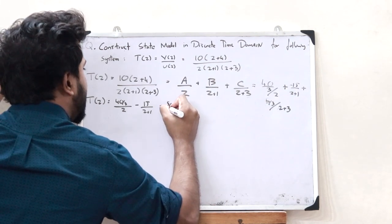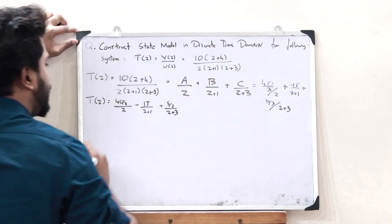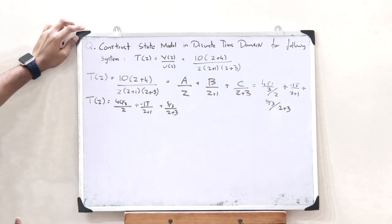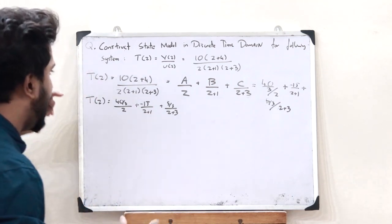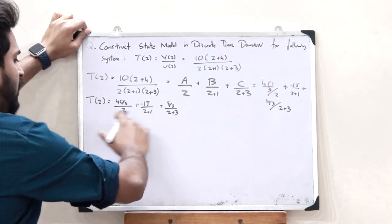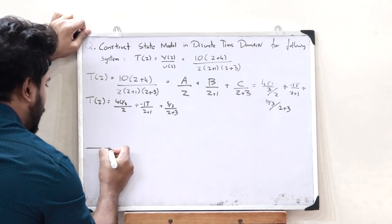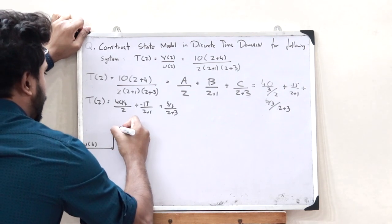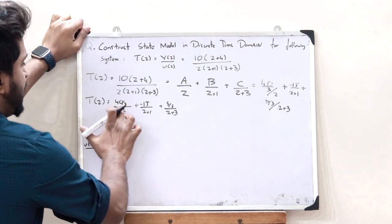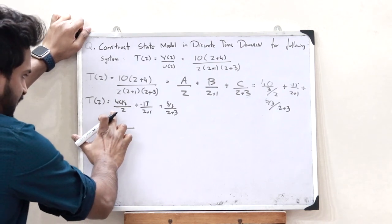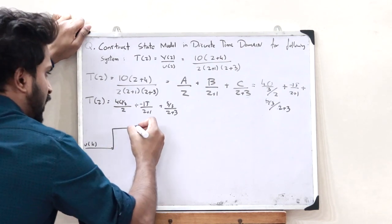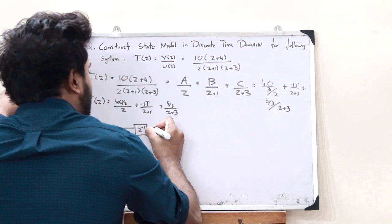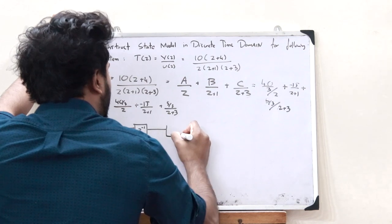Next, we construct a block diagram of this transfer function. The input signal is U of K. The first term is (40/3)/Z, so since there is a Z term in the denominator, this first passes through Z raised to minus 1, then through the gain 40/3, and is added at a summing junction.